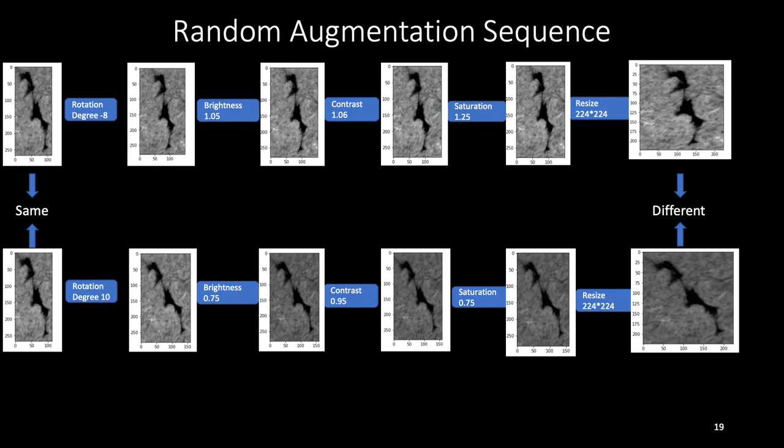To have large number of unique images of minority class, we follow the sequence of random augmentation. If we see here, the left two images are same, but when random rotation is applied, that is of minus eight and ten degrees, then the images become different. Similarly, brightness, contrast and other augmentations are applied with random parameters, which at last results in very different images. In the same way, we create multiple images to balance the minority and majority class.